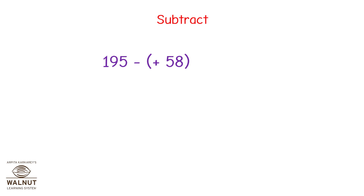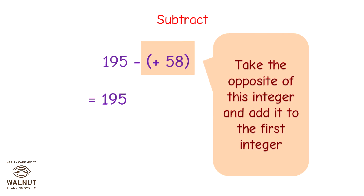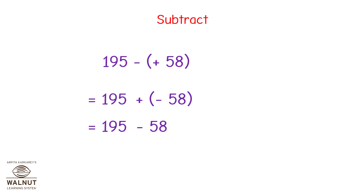Let us do this subtraction problem. We have 195 minus positive 58. We write the first integer as it is, then we take the opposite of the second integer and add it to the first. Now we solve: this becomes 195 minus 58, which is 137.